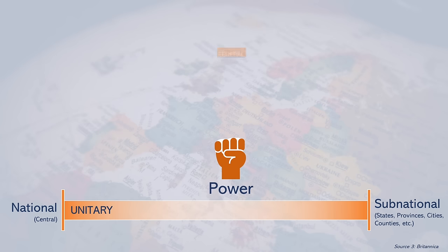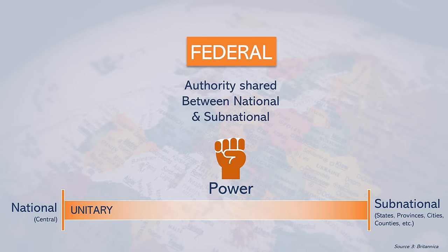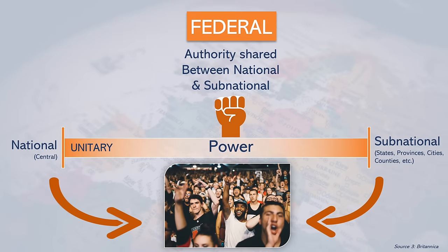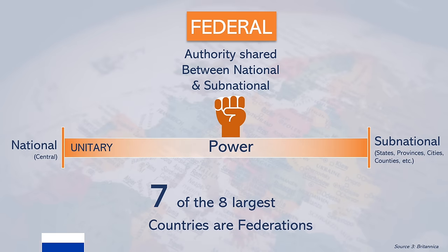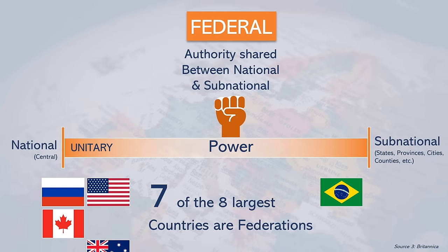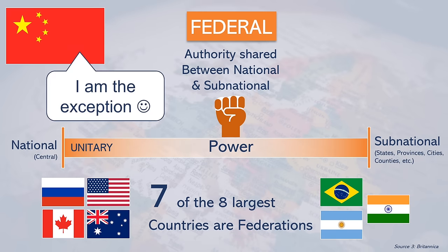Next, there's the federal model of government. Here, political authority is divided between two sets of governments — one national and the other subnational — both of which answer to the people. This means that local provinces and states have their own governments with some authority over their territory. Of the eight largest countries in the world by area, seven are organized on a federal basis.